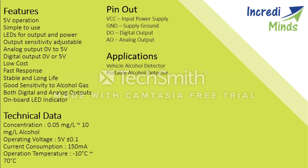Now we will look at the coding and connection part of the alcohol sensor. The alcohol sensor has four pins: the first is VCC, the second is ground, and the third and fourth are digital output and analog output respectively.